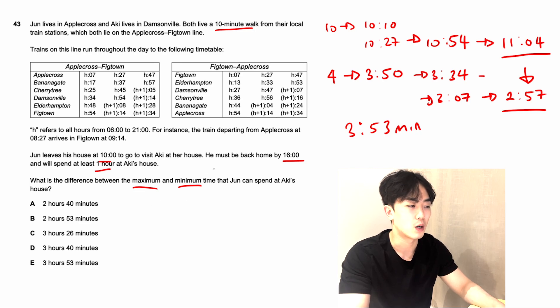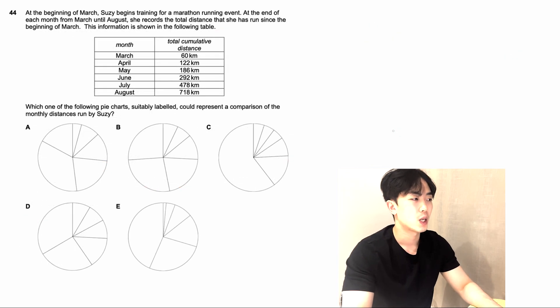Looking at the minimum time, it says that he will spend at least one hour at Aki's house. So the minimum time is just literally one hour. We just have to minus one hour, meaning that the difference between max and min will be 2 hours 53 minutes.